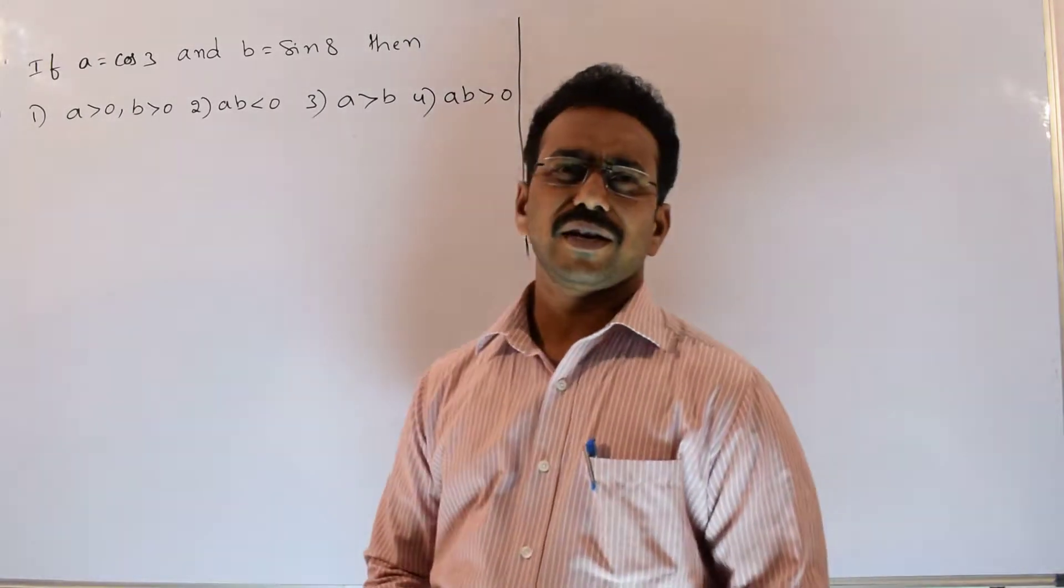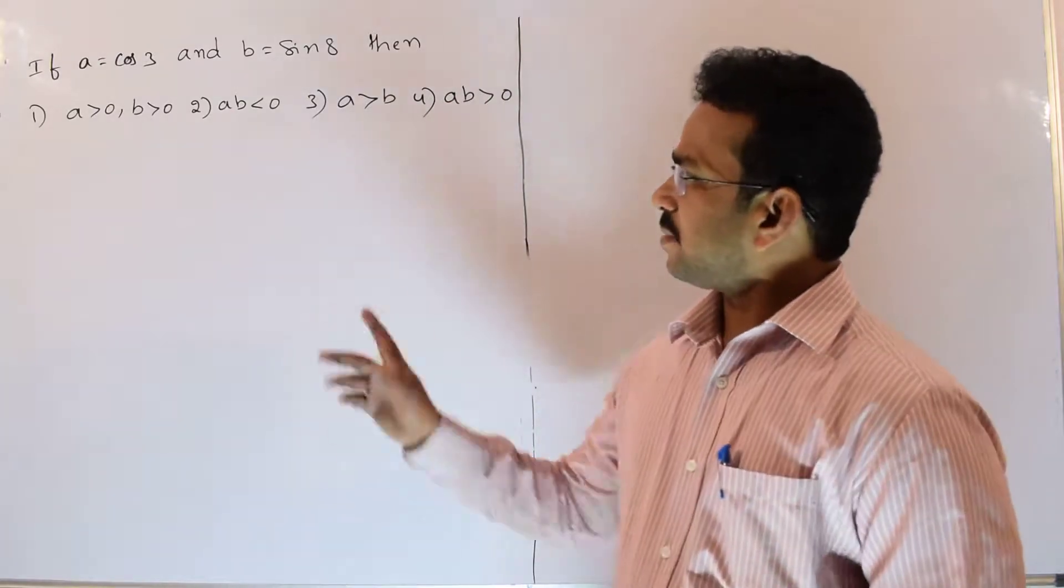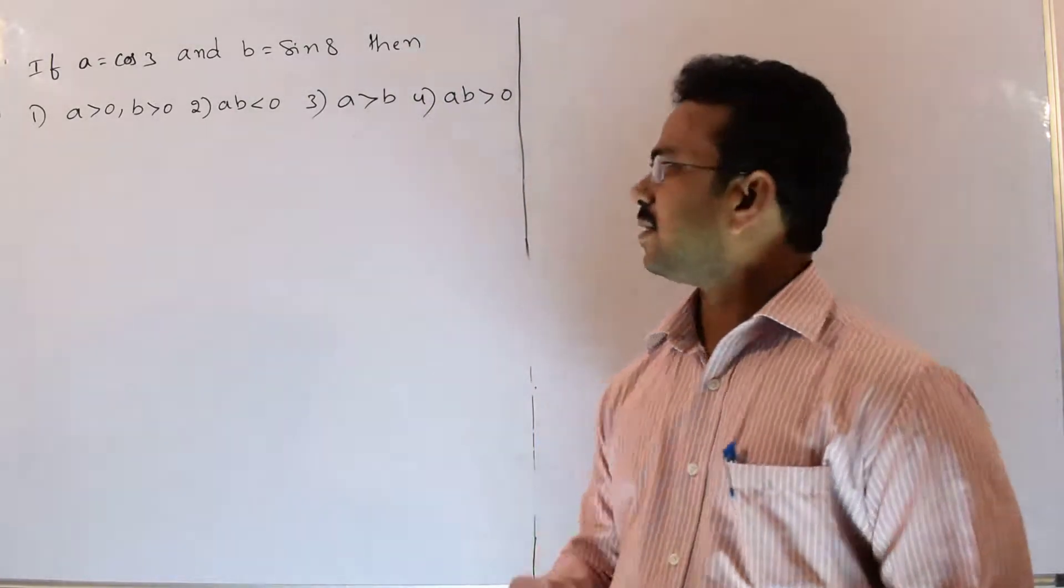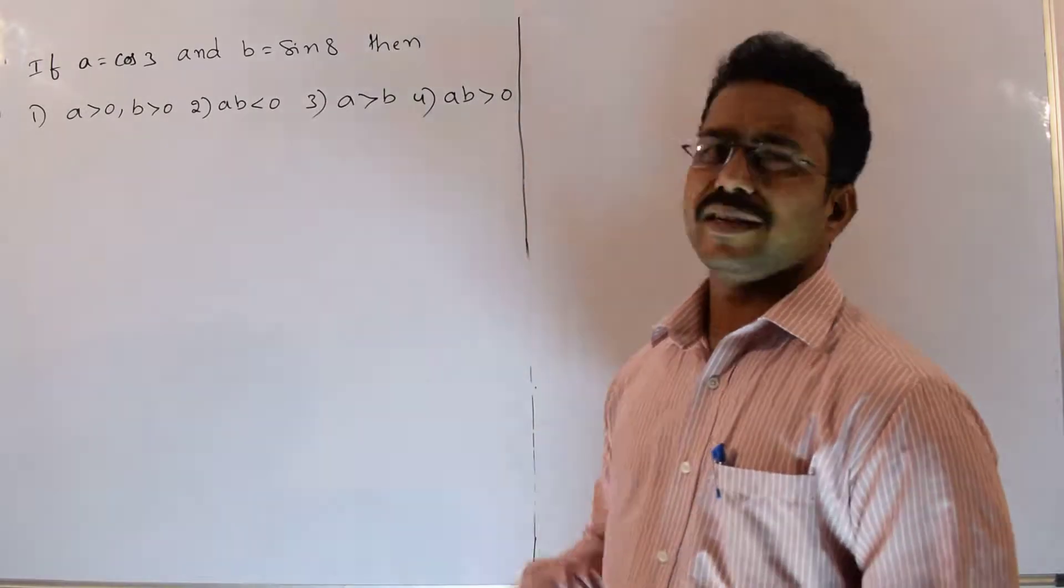See what are the options they provided clearly, let me read first. Here first option is A greater than 0, B greater than 0. Second option is AB less than 0, like that they have given.